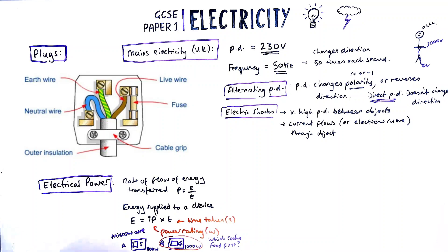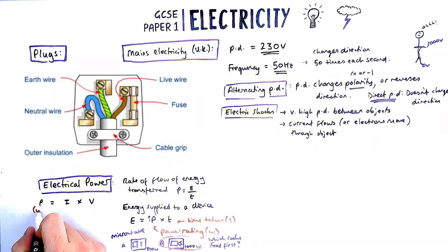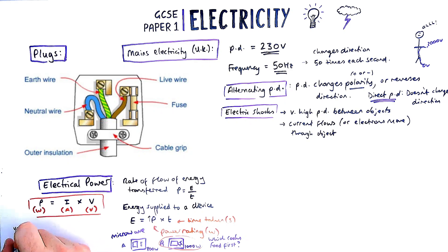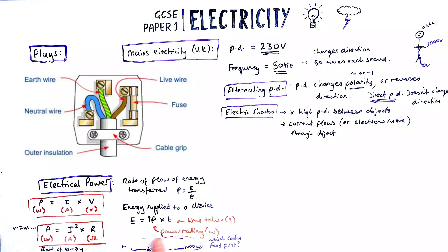To calculate electric power using the current and voltage, we multiply them together. Power equals current times by PD. You can derive this from the power equals energy over time equation - it's just a different way of calculating the power using current and PD. If we substitute into this equation the fact that voltage PD equals current times resistance, we could come up with a new expression: power equals current squared times by resistance. This is commonly known as the rate of energy lost through heating. Rate meaning per second, energy per second lost through heating you can work out as I squared times R.